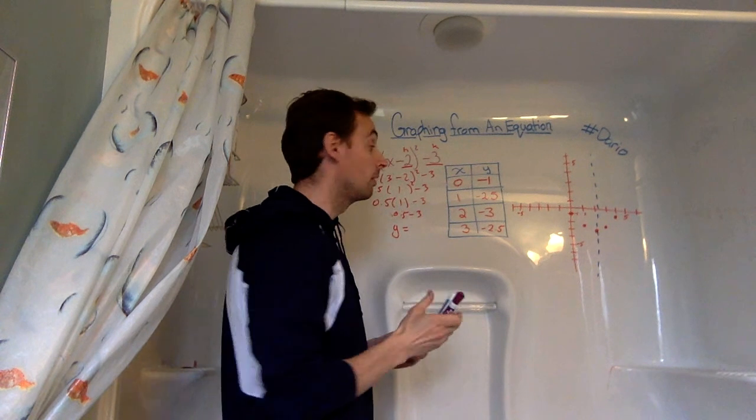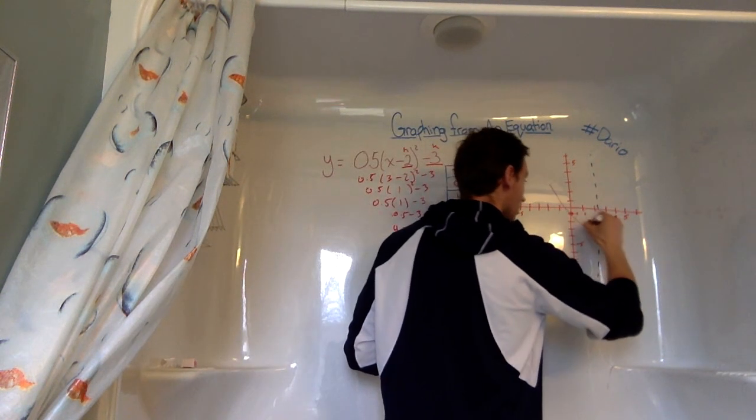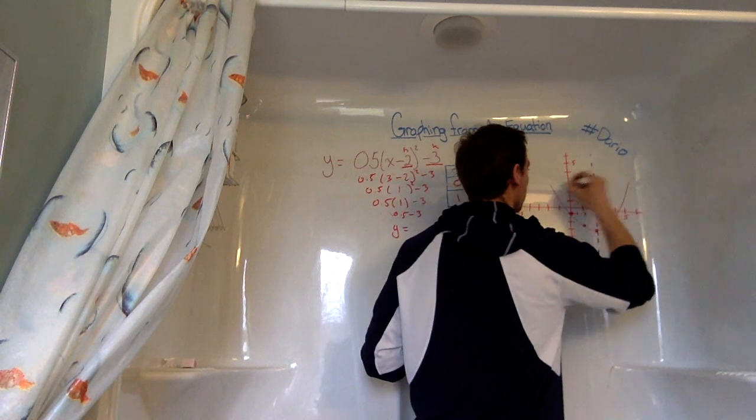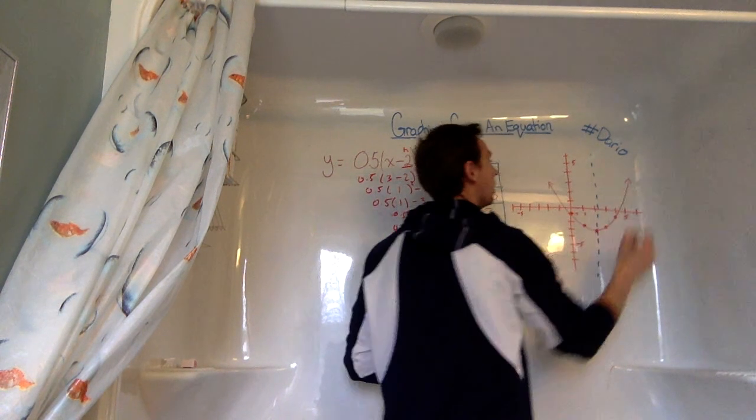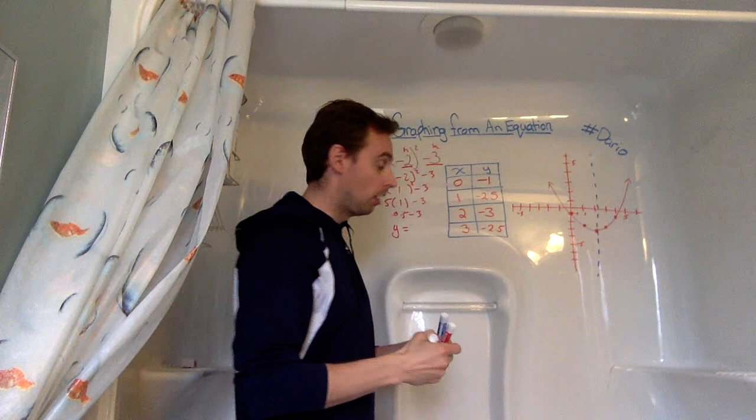And now all we're going to do is connect our dots, and we will have our graph visual, and ready to roll to kind of the best of our hand-drawn abilities. I'm just going to throw some arrows here to show that the parabola is going to continue on for infinity.